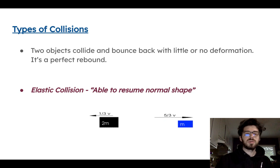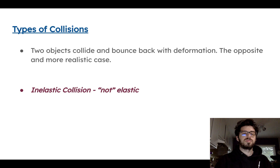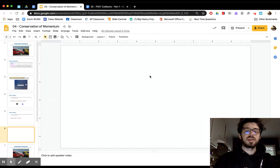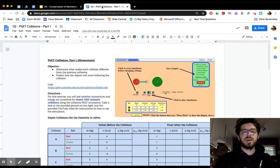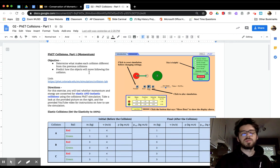The other type of collision is an inelastic collision. It just means that when two objects collide with each other, there is going to be some bending or deformation of the objects. The activity is FET Collisions Part One. Your objective is to determine what makes each collision different from the previous collisions and to predict how objects will move after a collision.